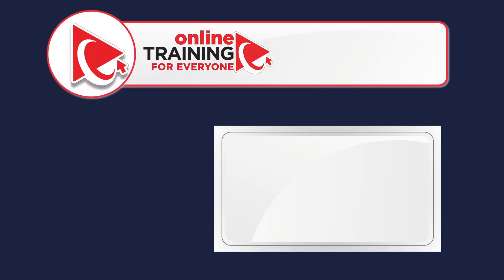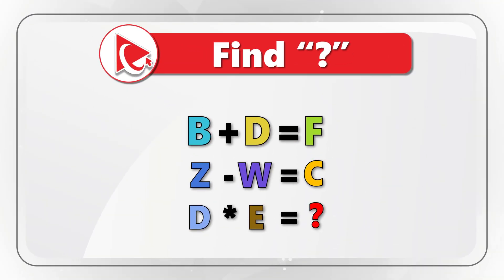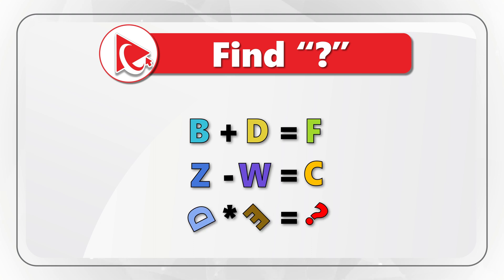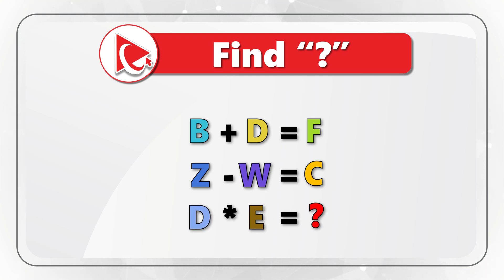There is no better question to boost your IQ. You are presented with 3 expressions and need to find the missing item in the third. The first expression is D plus D equals F. The second is Z minus W equals C. The third is D multiplied by E equals the missing item. Select the missing item from 4 choices: A (T), B (S), C (U), or D (I).